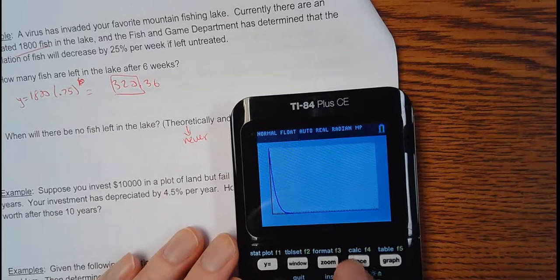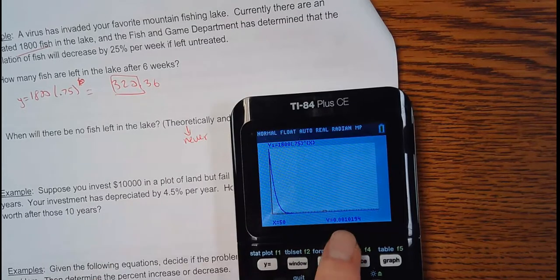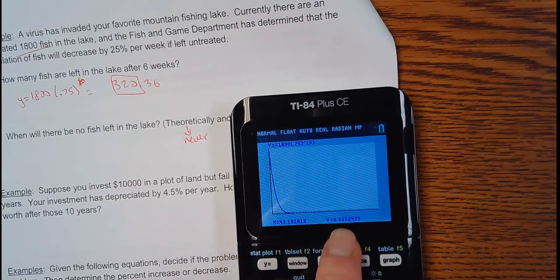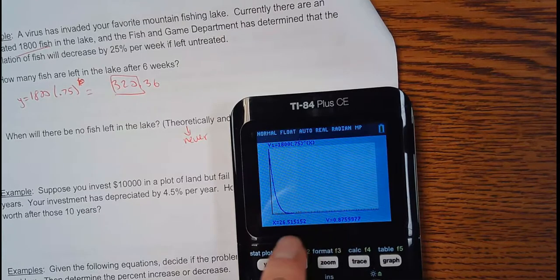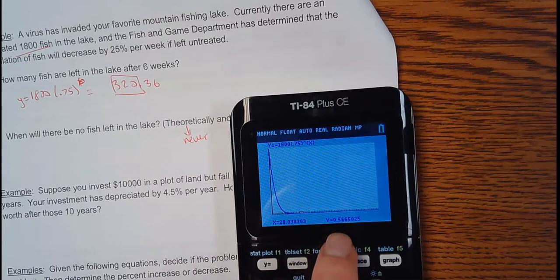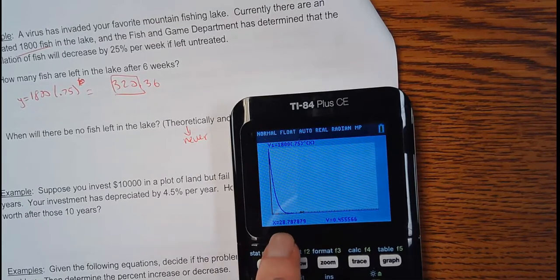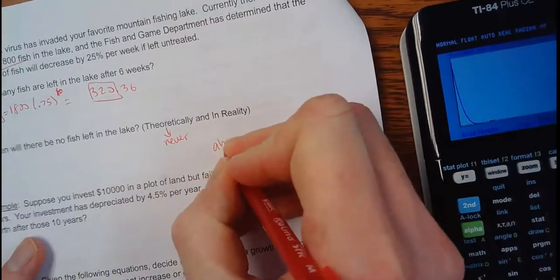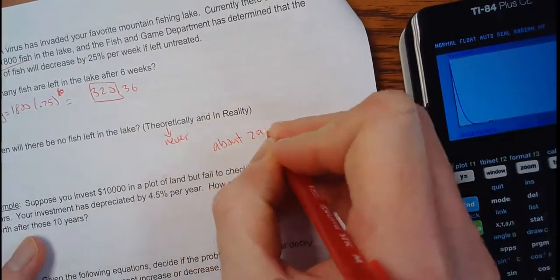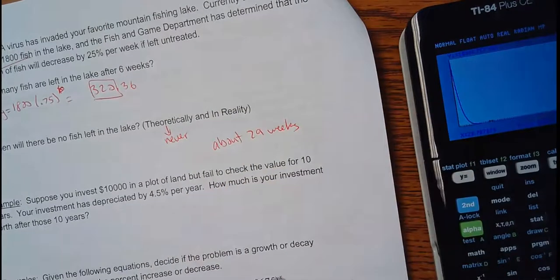But in reality, how many weeks? Let's trace this guy. At what point am I below one? Let's say, when do I hit below one? So, it looks like here we could probably round that up to one still. So, one fish, one fish. Maybe right there, we fell below. So, after 28 or 29 weeks, roughly. Let's say about 29 weeks, there weren't any fish left.